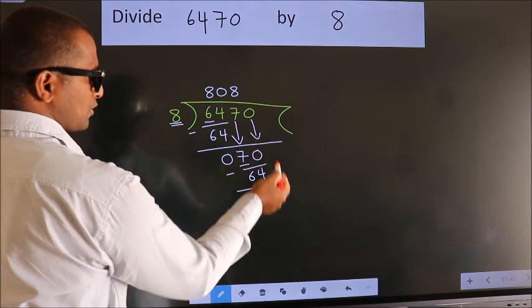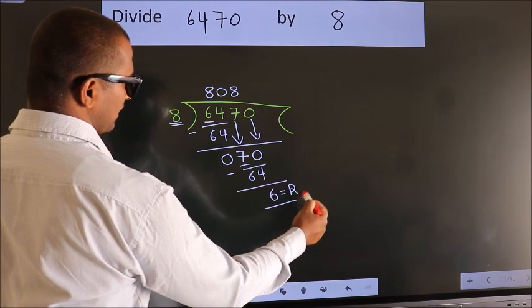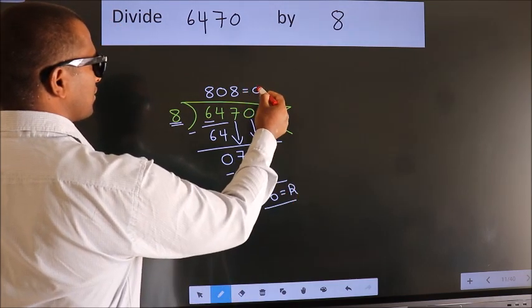No more numbers to bring it down. So we stop here. This is our remainder. This is our quotient.